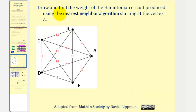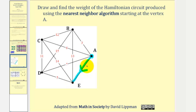Let's take a look at another example. We want to draw and find the weight of the Hamiltonian circuit produced using the nearest neighbor algorithm, starting at vertex A. So from A to E would have a weight of two, A to D a weight of seven, A to C a weight of six, and A to B a weight of three. Two has the least weight, so we'll go from A to E. From E, we have three choices: B, C, or D. Edge EB has a weight of thirteen, edge EC a weight of fourteen, and edge ED a weight of five. Five is the least weight, so we'll go from E to D.